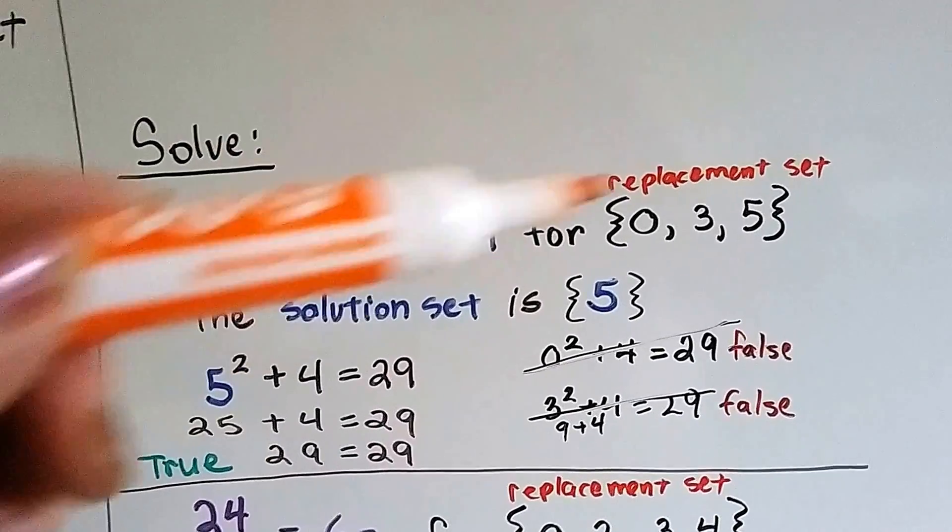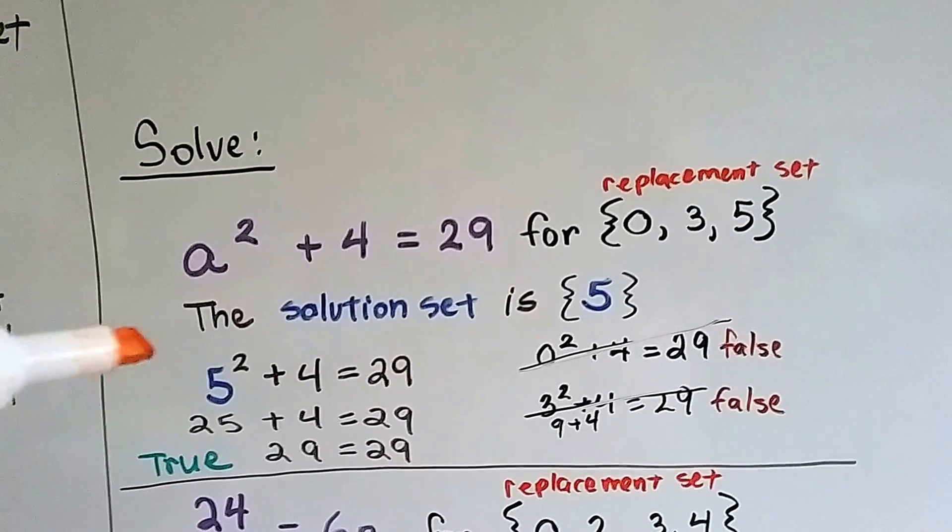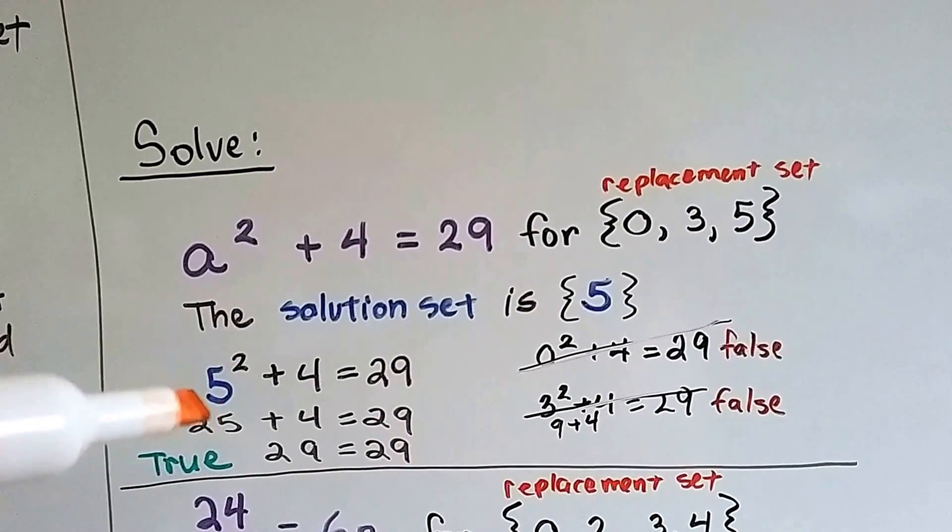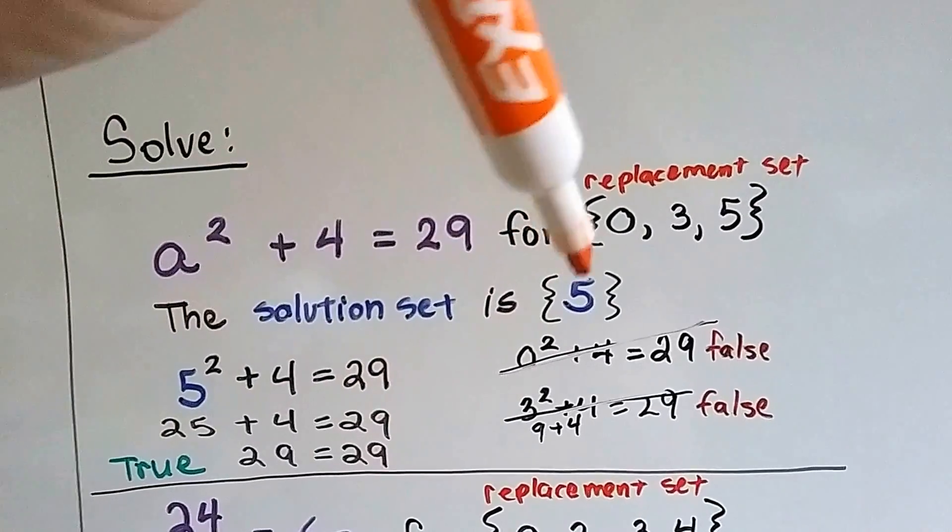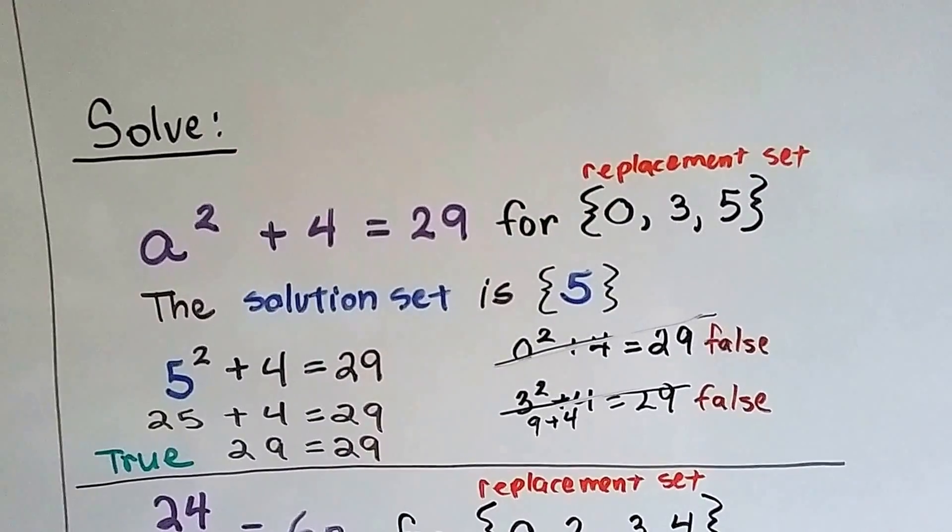But when we use the 5 that's sitting in the replacement set, 5 times 5 is 25 plus 4 is 29. That's a true statement. So our solution set contains only the 5. See? It's sitting in the braces.